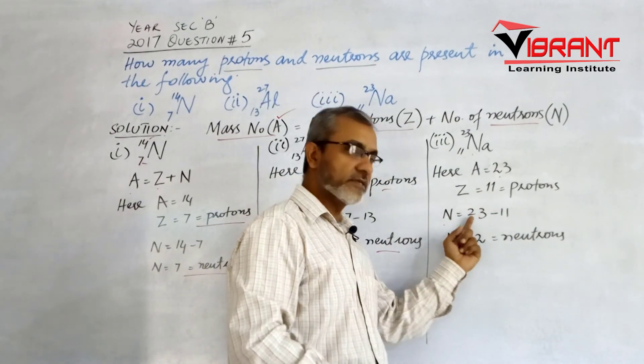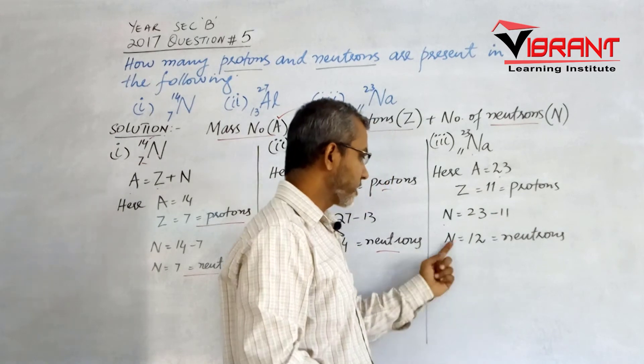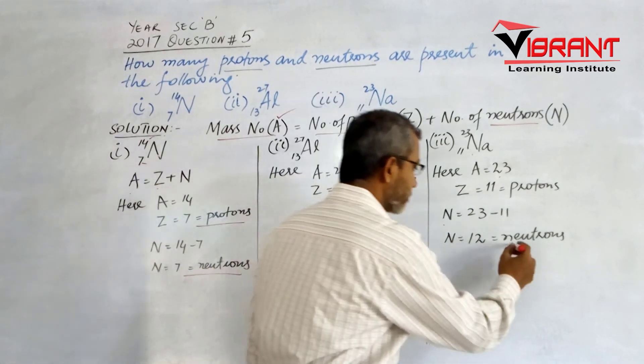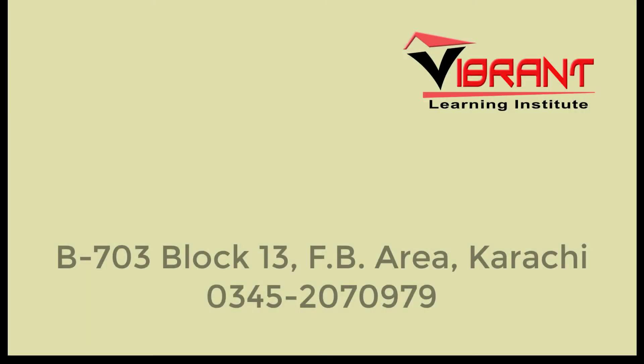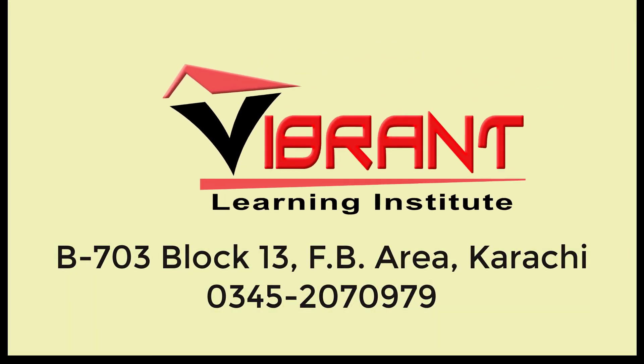The number of neutrons N equals A minus Z, which is 23 minus 11, equals 12 neutrons.